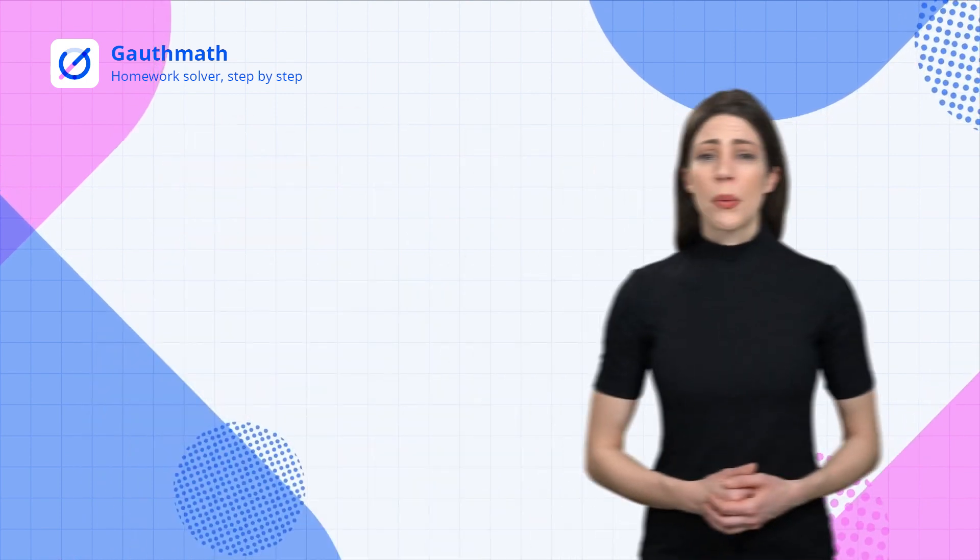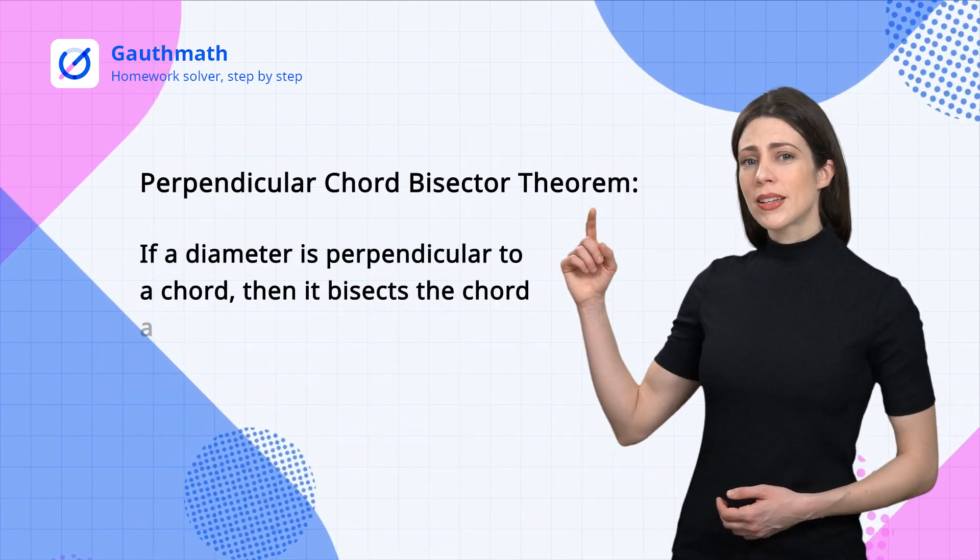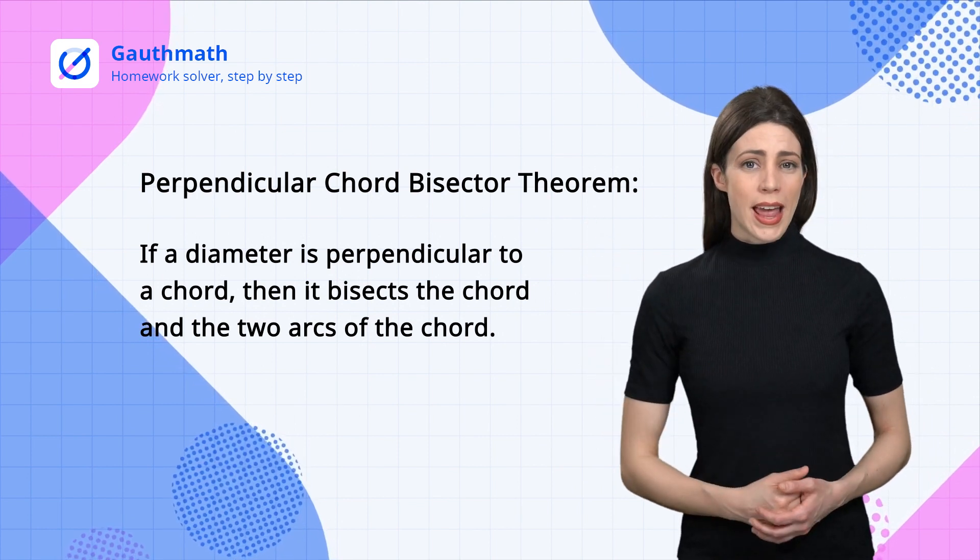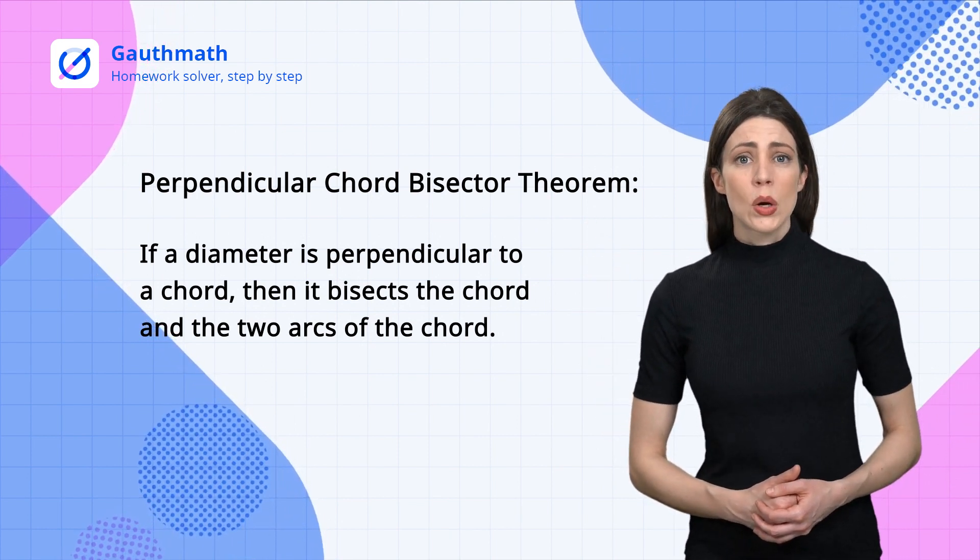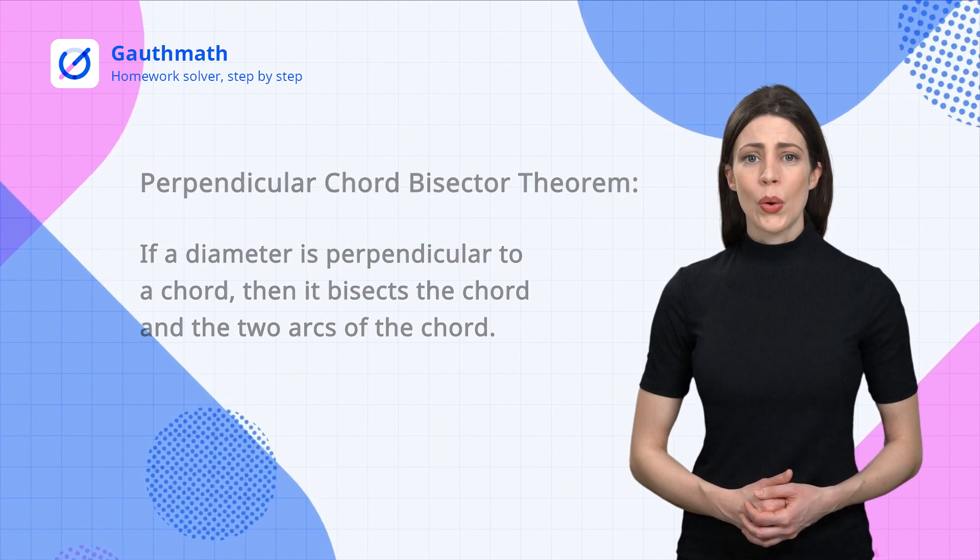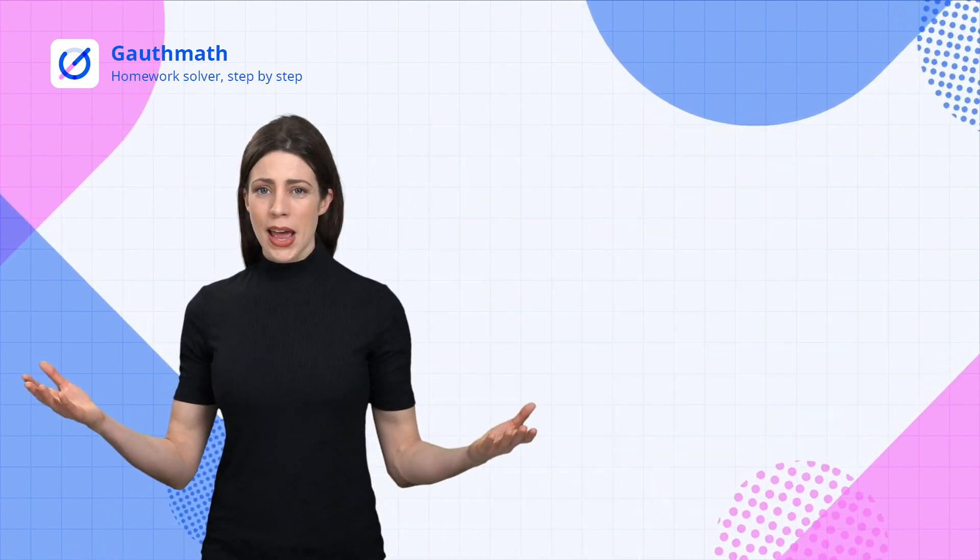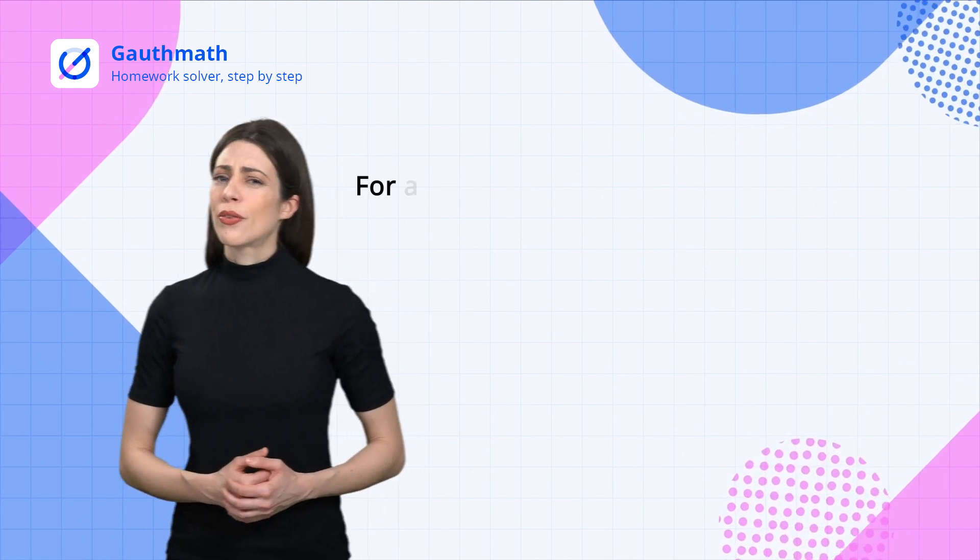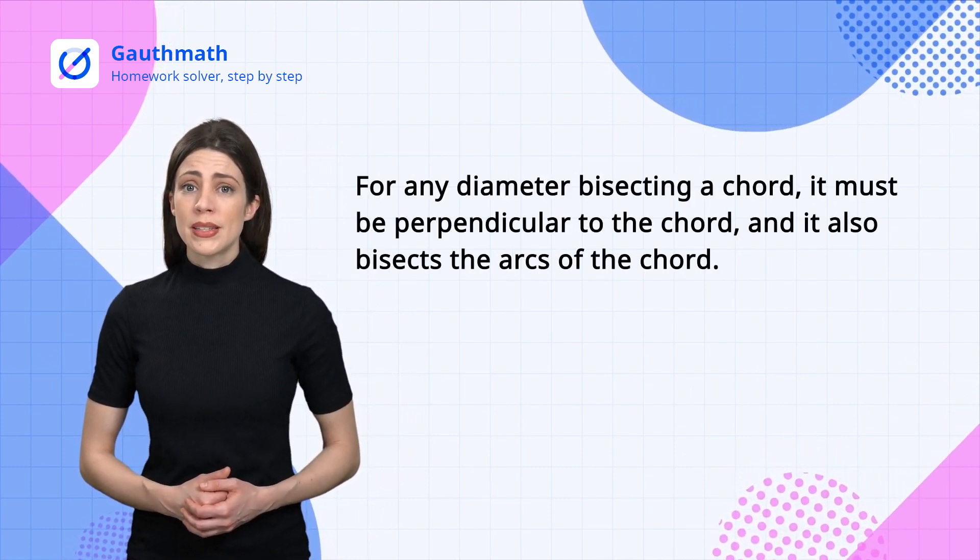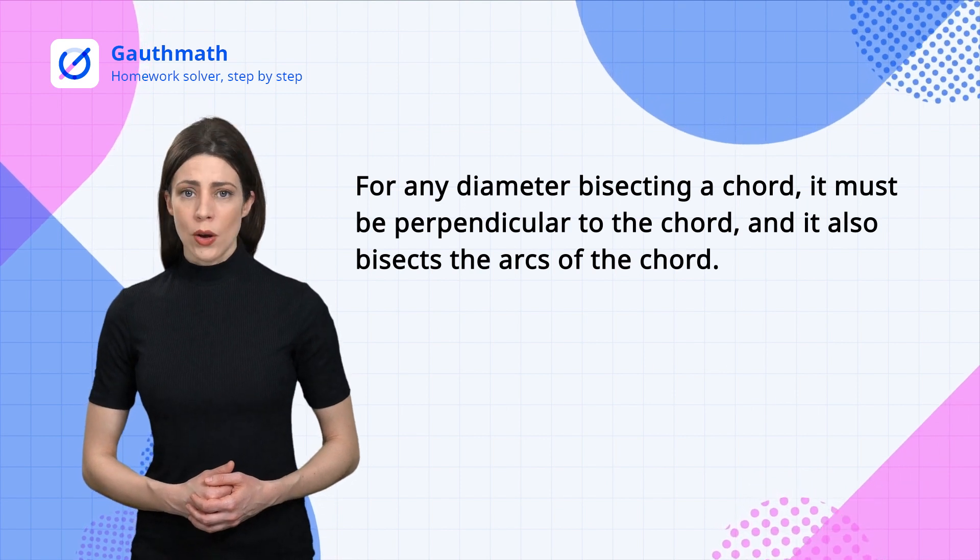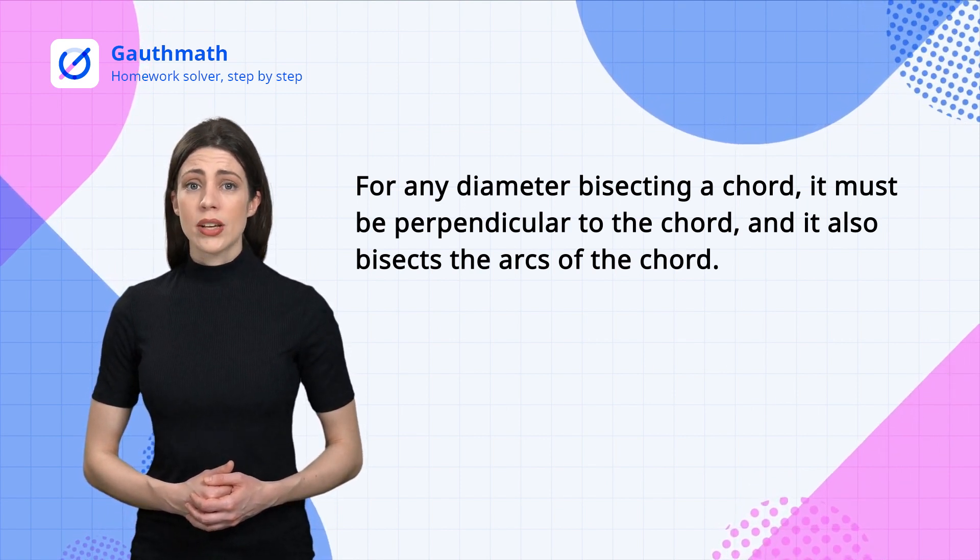And that gives us the perpendicular chord bisector theorem: if a diameter is perpendicular to a chord, then it bisects the chord and the two arcs of the chord. Taking a step further, we can infer that for any diameter bisecting a chord, it must be perpendicular to the chord and it also bisects the arcs of the chord.